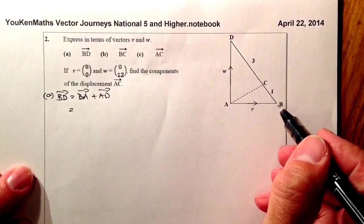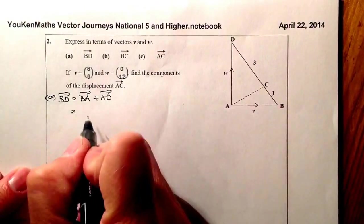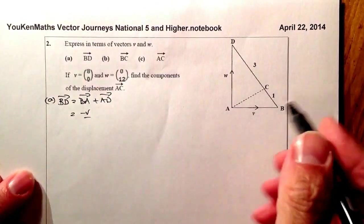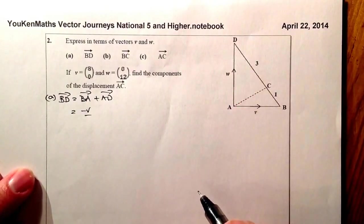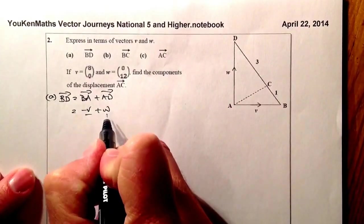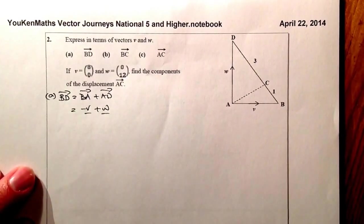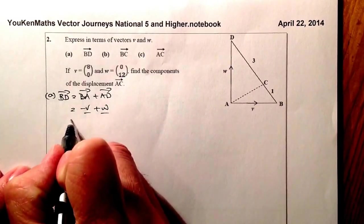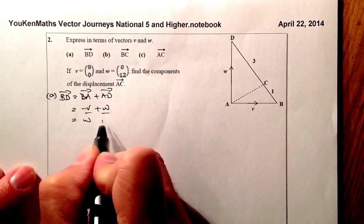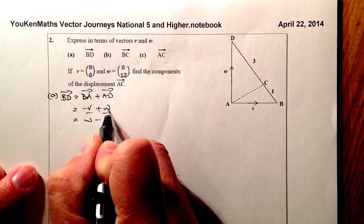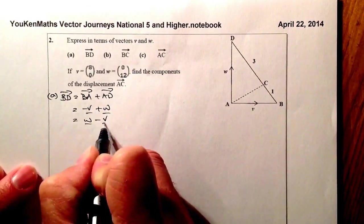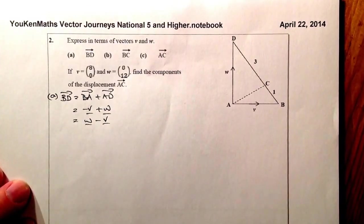Now, for that part there, for BA, I'm going against vector V, so that's going to be a negative V that's going to appear there. This vector here for AD is going to be W, so that'll be plus W. And that'll be the answer to that part there. I'm just going to tidy that up by putting the negative sign second, so that'll be W minus V. OK, so that's there, is the vector BD.